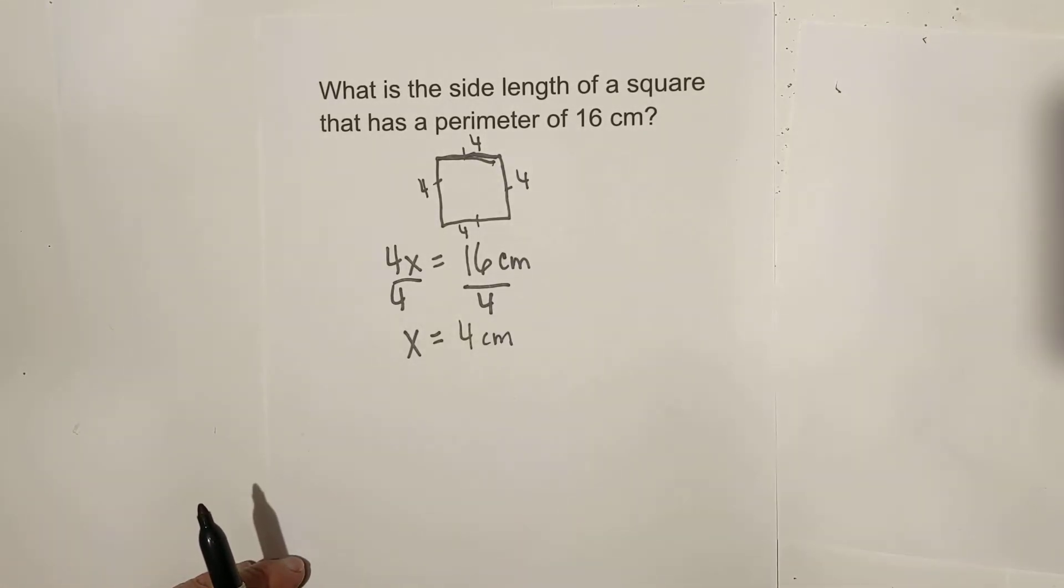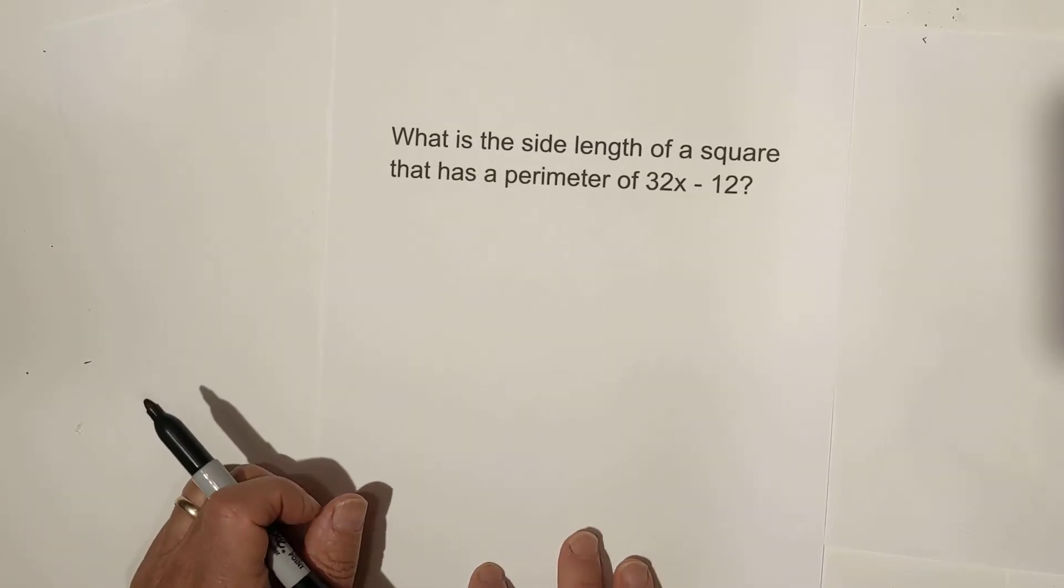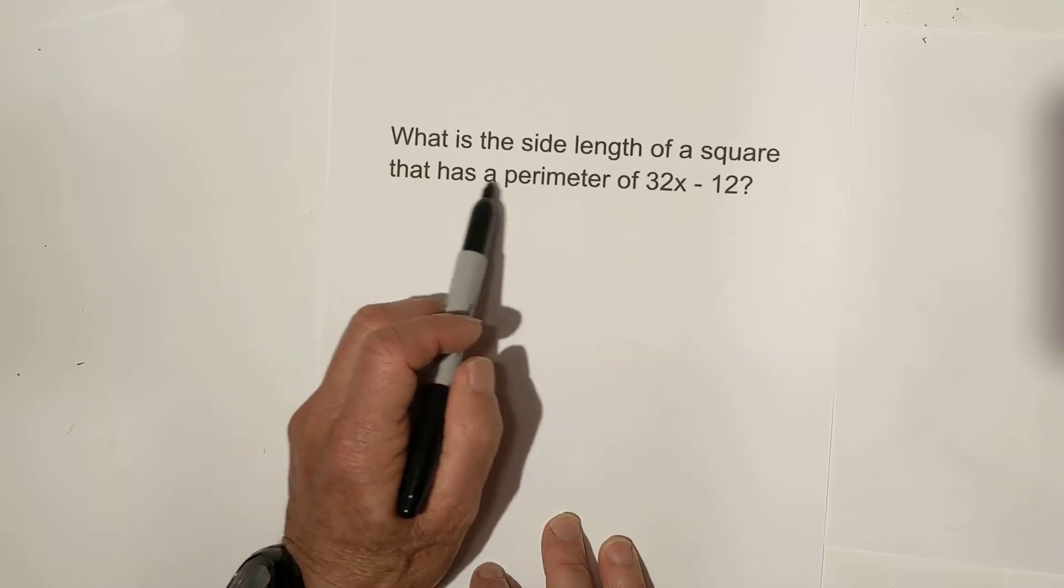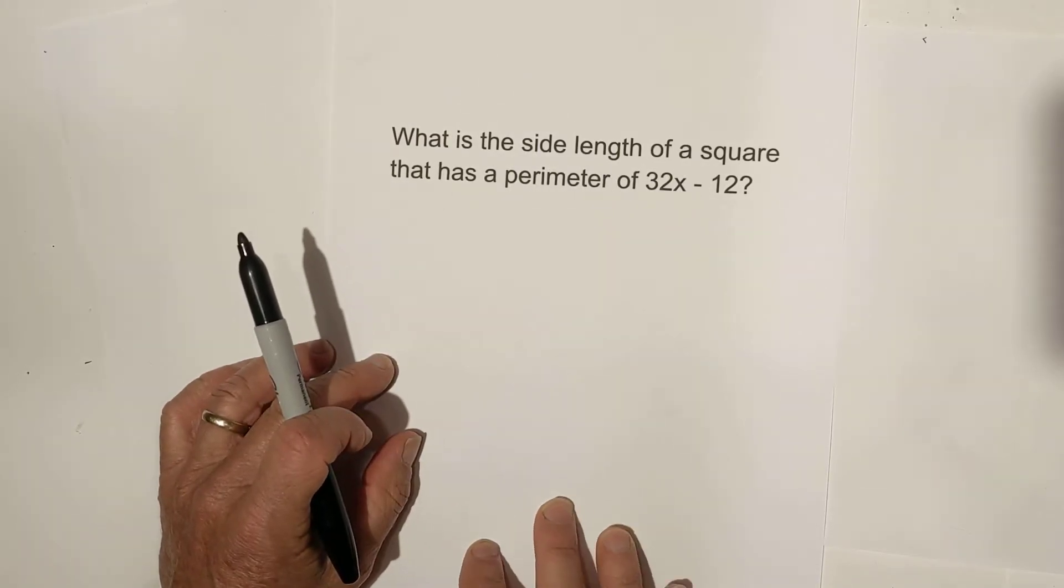Let's look at another example. In this example, we are given some variables. We have, what is the side length of a square that has a perimeter of 32x minus 12?